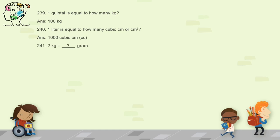Question 241: 2 kilograms equals how many grams? 2,000 grams. Question 242: 1 decimeter is equal to how many meters? 1 decimeter means 0.1 meters.